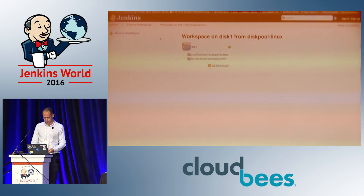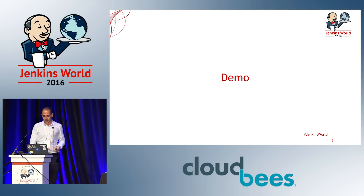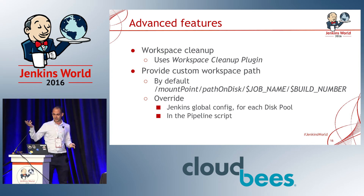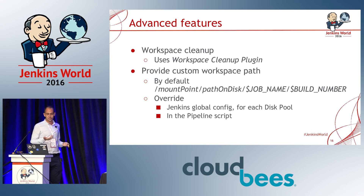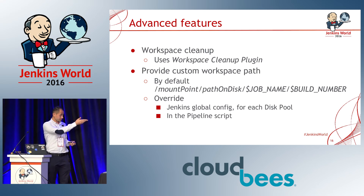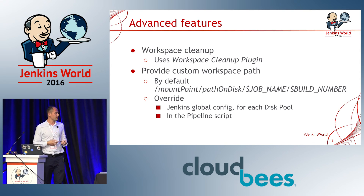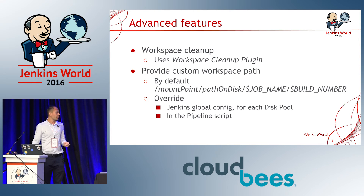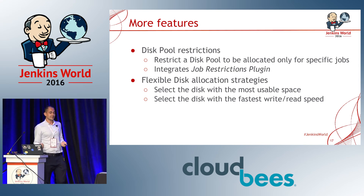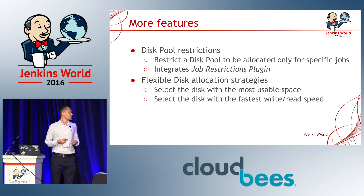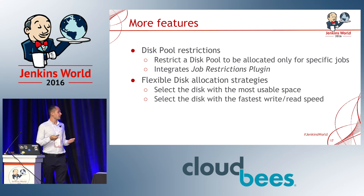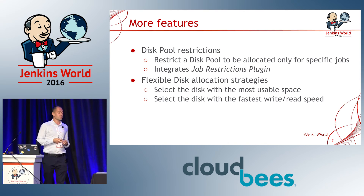That was my short demo. The plugin also has more advanced features — like you can clean the workspace after it was used. By default, the workspace path is computed based on a formula, but you can override it either in the Jenkins global config or in the pipeline script. It also has features like restricting a specific disk pool to be allocated only for specific jobs, or flexible disk allocation strategies.